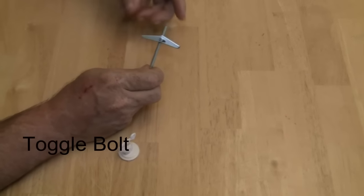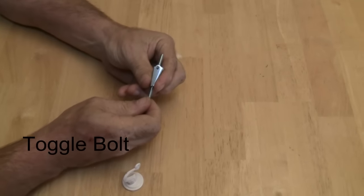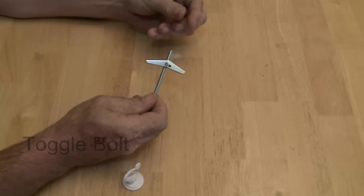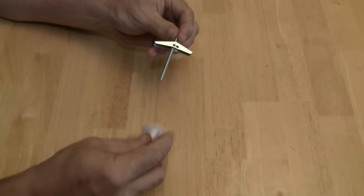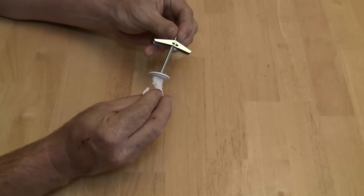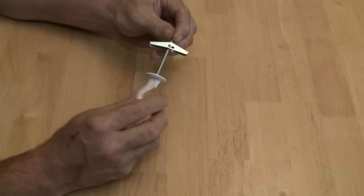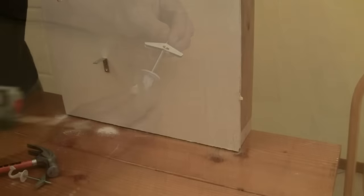The toggle bolt has spring-loaded wings. These are the toggle and are affixed to the bolt or machine screw. The toggle springs open against the interior of the wall and acts as an anchor for the hanging hardware.